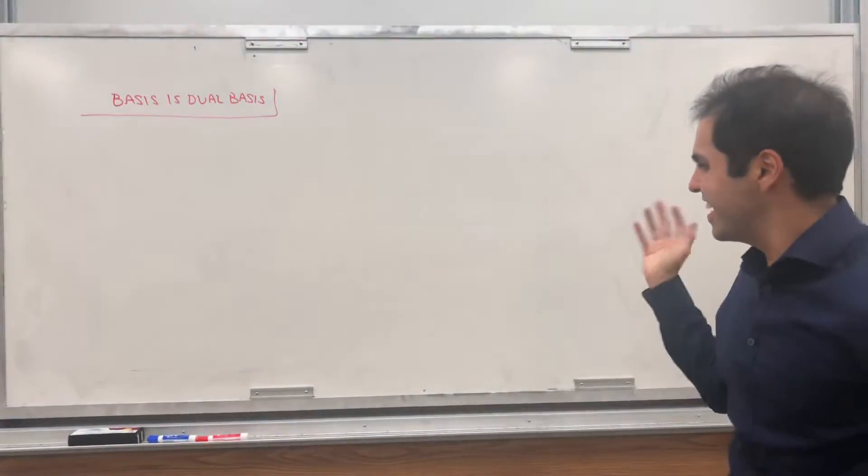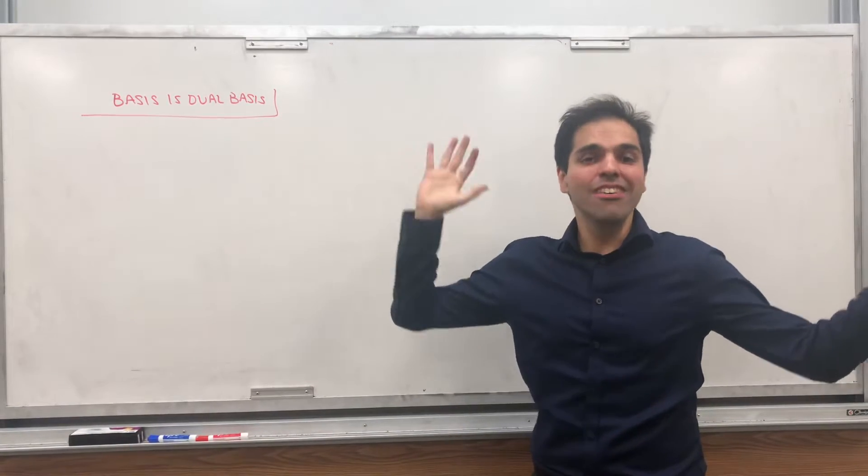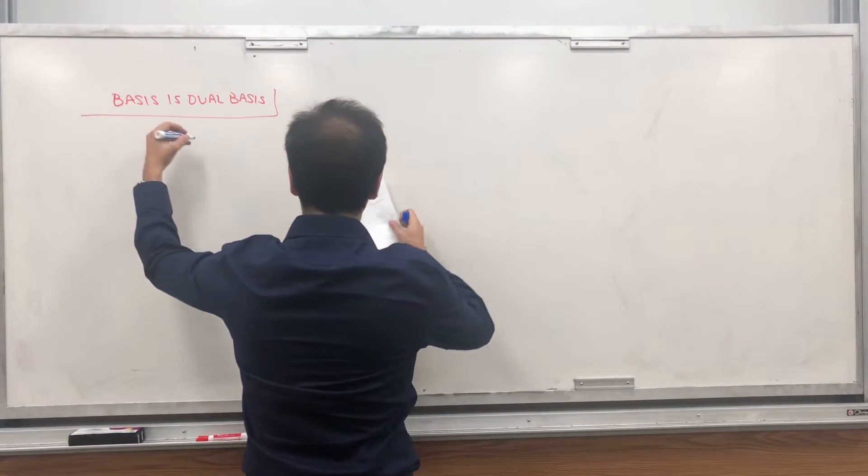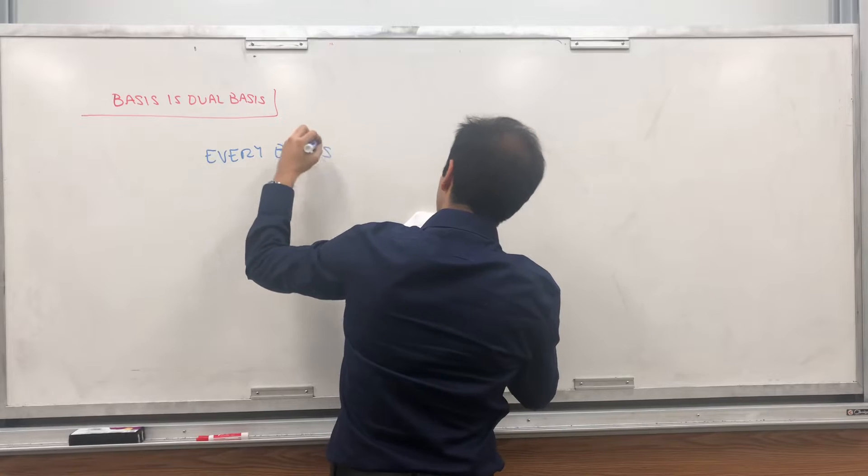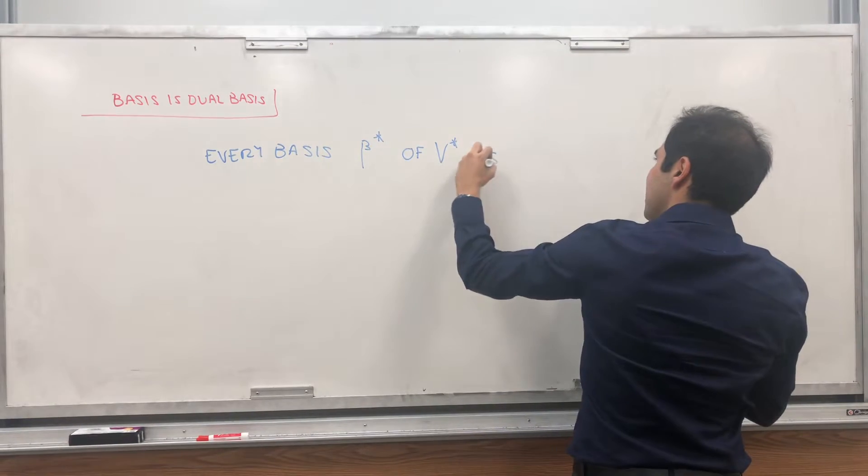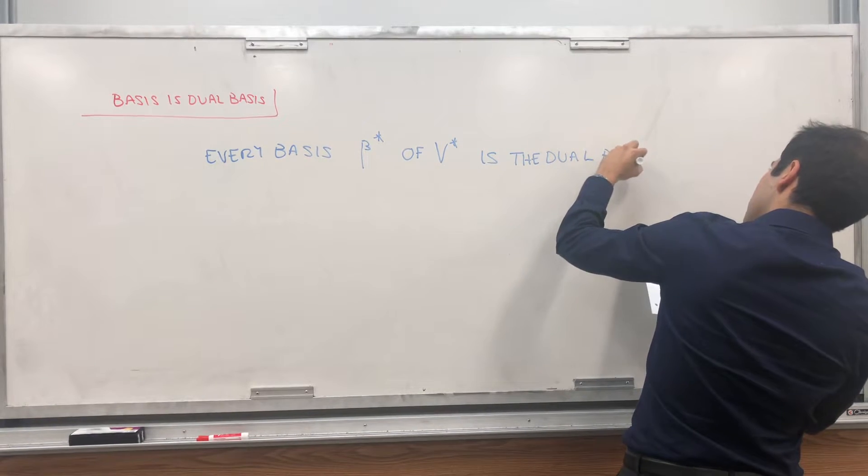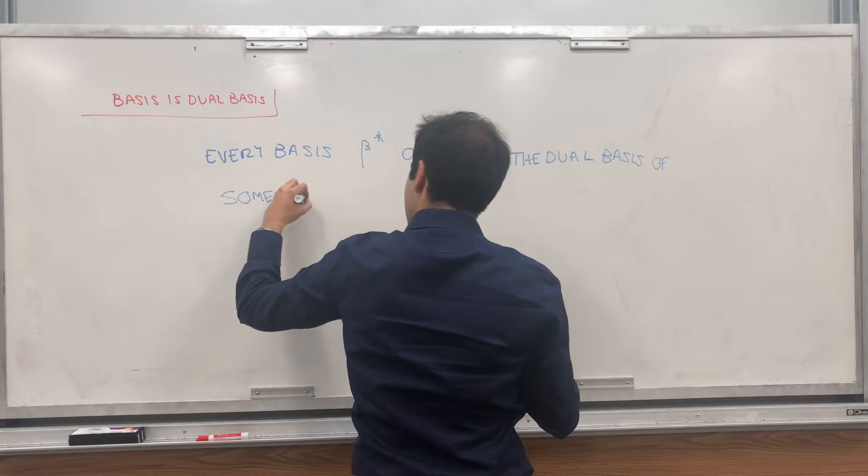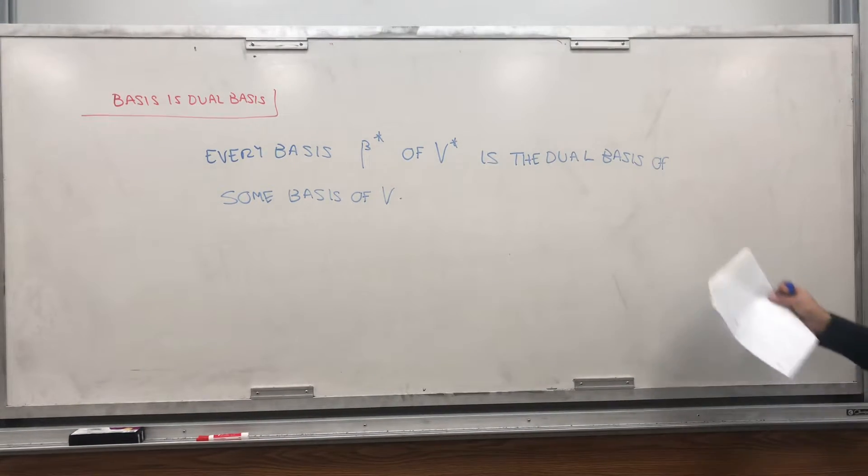All right, thanks for watching and today I want to show you a really cool consequence of the duality between V and V double star. So today let me show you the following corollary, namely every basis for your dual space, let's call it beta star of V star is in fact the dual basis of some basis of V.